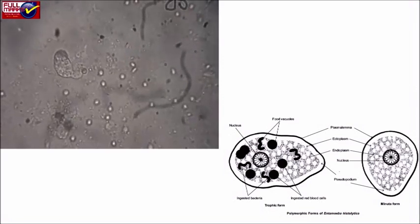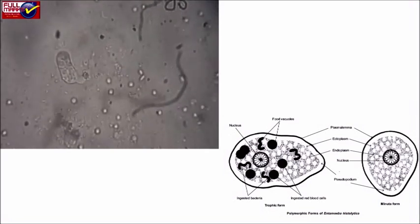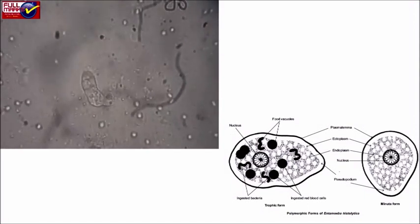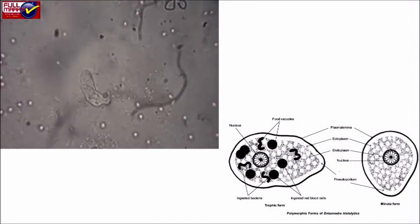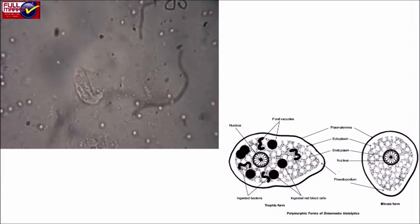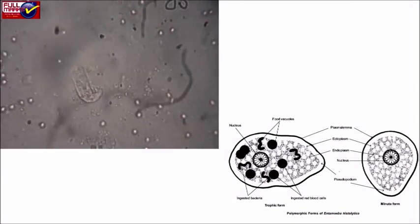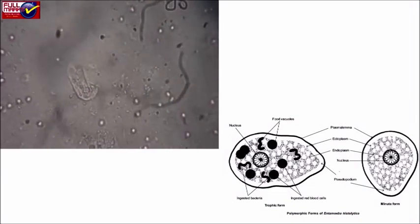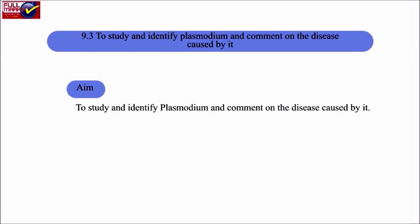Result: Various identification characteristics of Entamoeba histolytica have been studied. 9.3: To study and identify Plasmodium and comment on the disease caused by it. Aim: To study and identify Plasmodium and comment on the disease caused by it.